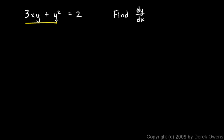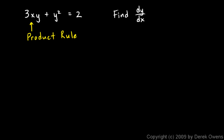I'm going to take the derivative with respect to x of the left and the derivative with respect to x of the right, and on the left I differentiate term by term. This first term is a product, so to take the derivative there I need to use the product rule. The 3 just stays out front as a constant multiplier, and then I'll do the first times the derivative of the second plus the second times the derivative of the first.